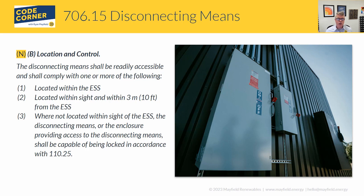You can have that disconnect located within the ESS itself — that's a perfectly fine way of meeting the requirement. You can also have it within sight and within three meters or 10 feet of the ESS. Note that 'within sight' in Article 100 means visual line of sight and within 50 feet, but in this situation we've reduced that down to 10 feet — an important distinction.